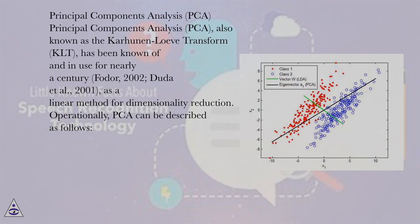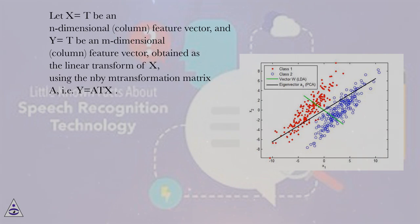Operationally, PCA can be described as follows. Let X be an n-dimensional column feature vector, and Y be an n-dimensional column feature vector obtained as the linear transform of X using the mean transformation matrix A, i.e., Y = A^T X.